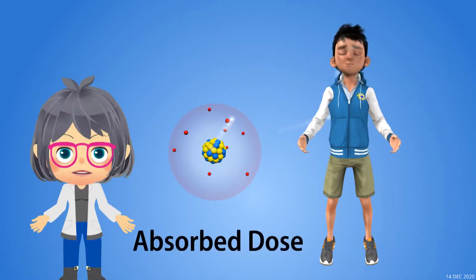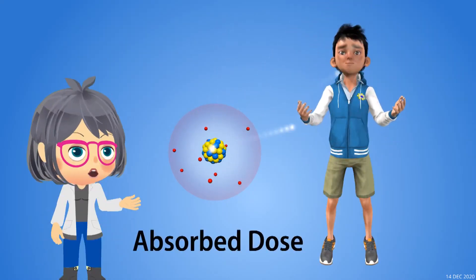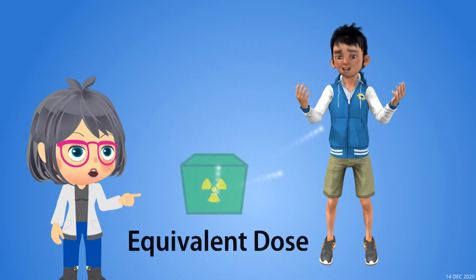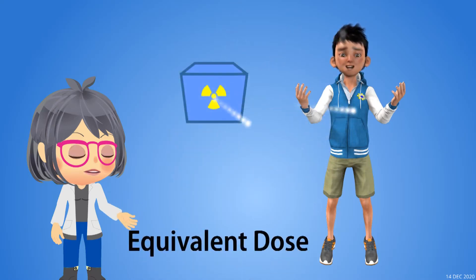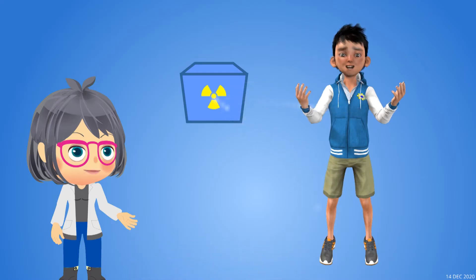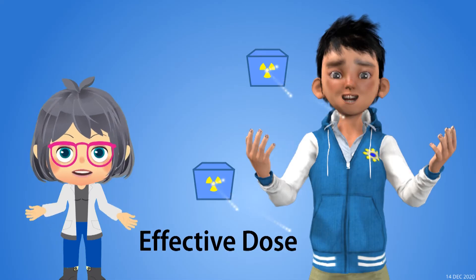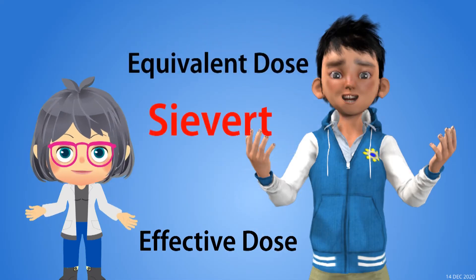For living things, this absorbed dose can have an equivalent biological effect. The measure of this biological effect is called equivalent dose when the type of radiation is considered, and effective dose when the type of tissue is considered. Both equivalent dose and effective dose use sievert as a unit of measure.